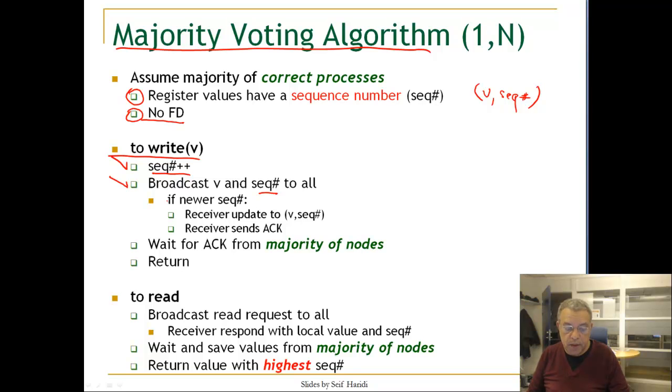If we got a newer sequence number, we update the local value and send an acknowledgement back to the sender. The sender will wait for ack from a majority of nodes, and if it gets this, it will return. This tells us that the algorithm is resilient to less than half of the nodes failing. If less than half of the nodes fail, the algorithm still will get acknowledgement from the majority, and the write will complete.